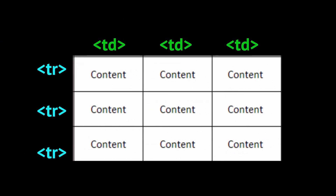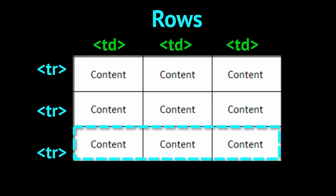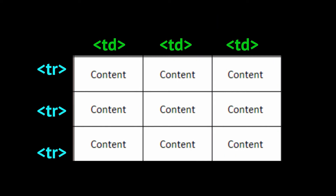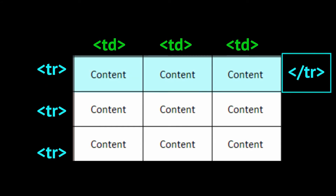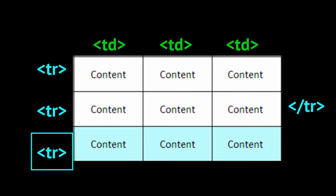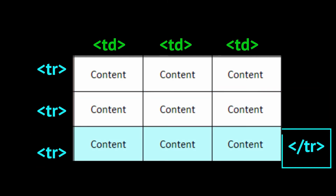Basically, the way a table is set up — you're familiar with tables from Word or Excel, they're rows and columns. There are three rows going down and three columns going across. Rows are identified with the TR tag. There's an opening TR and at the end a closing TR with a slash in front — TR stands for table row.